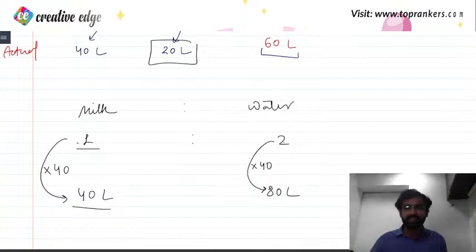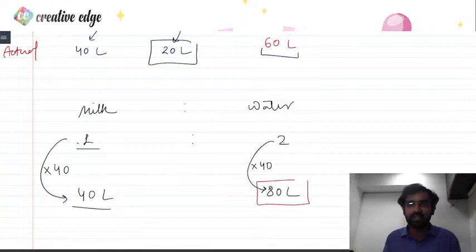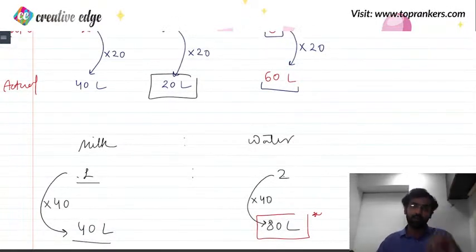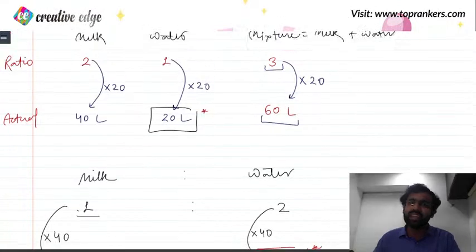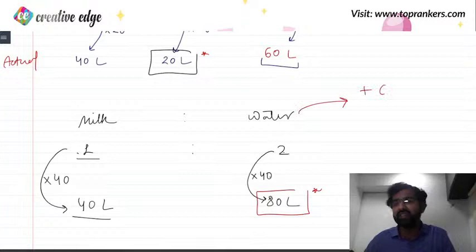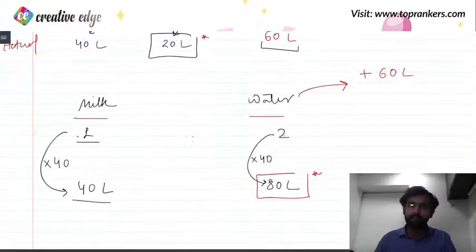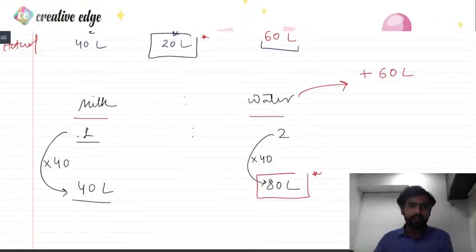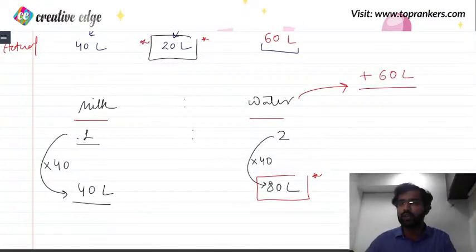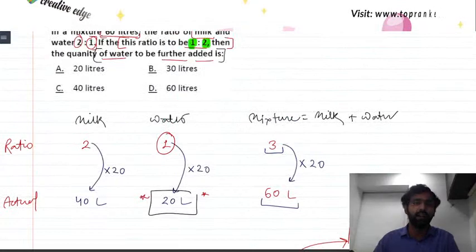The water quantity should now be 80 liters. The mixture already had 20 liters of water. So if I want to take the water level from 20 liters to 80 liters, I need to add 60 more liters of water. With milk at 40 liters and water at 80 liters, the ratio is 40 is to 80, which is 1 is to 2 — correct. So the answer is 60 liters of water to be added, which is option D.